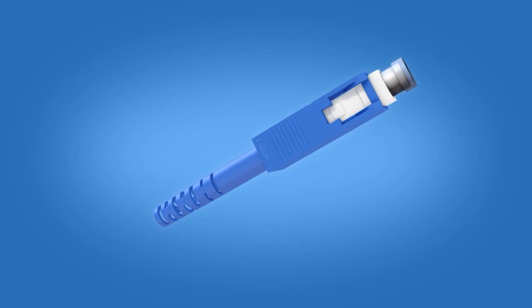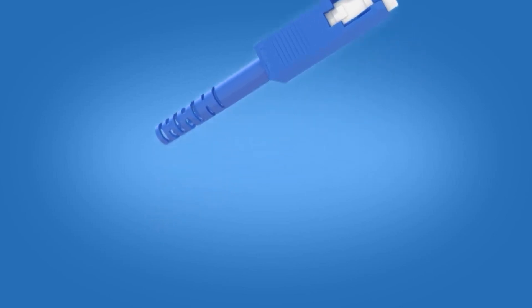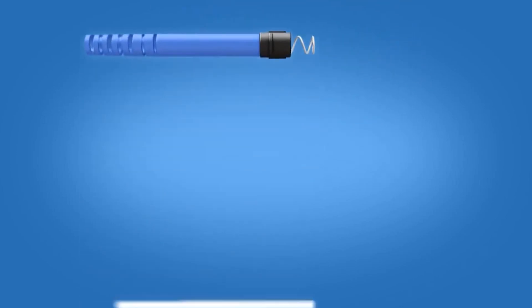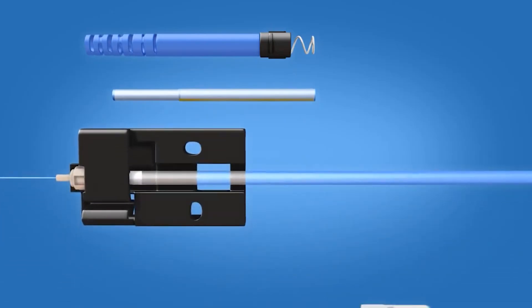The SC fuse connect connector includes the following materials: a boot unit, a protective sleeve, a ferrule unit, a connector body, connector housing, and a dust cap.